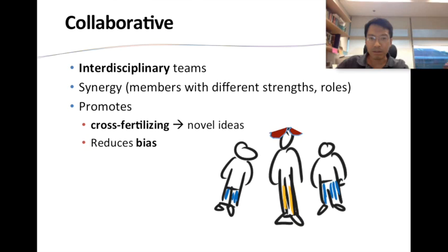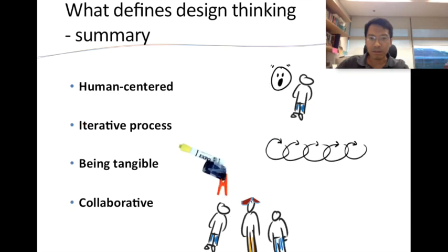Diverse teams will lead to more novelty and a reduction in bias because one person is not driving everything. Organizational behavior studies show that diversity really improves team performance — only when you have a diverse team will those studies truly be seen to work. So to summarize, design thinking is about these four things: being human-centered on users' needs and wants, being an iterative process, being more tangible through prototyping, and being about collaboration.